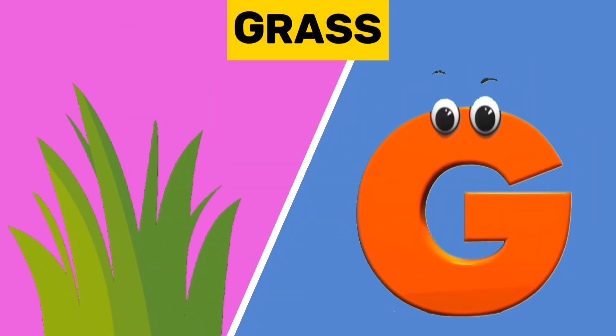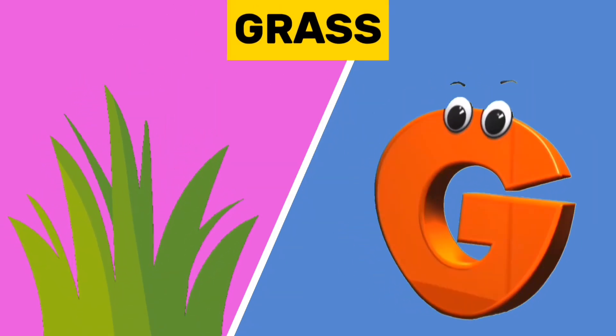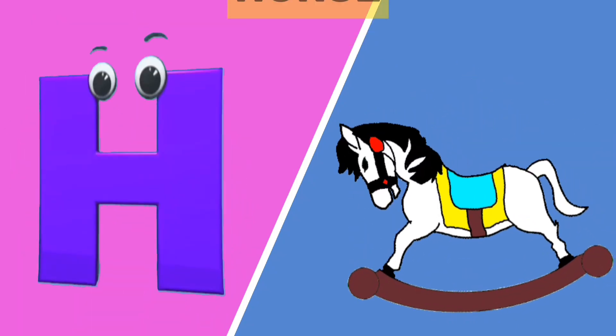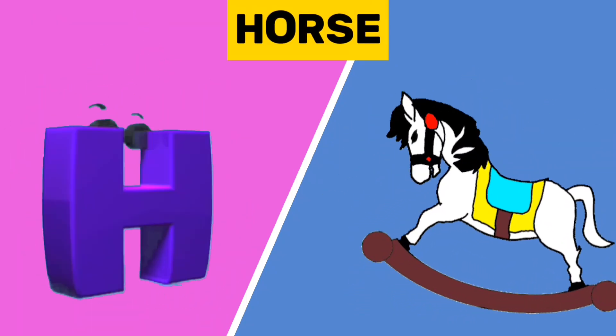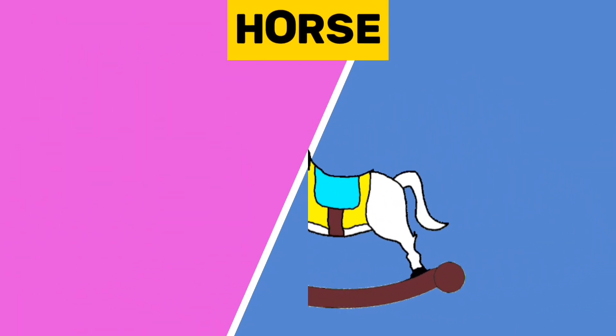G is for grass. G, G, grass. H is for horse. H, H, horse.